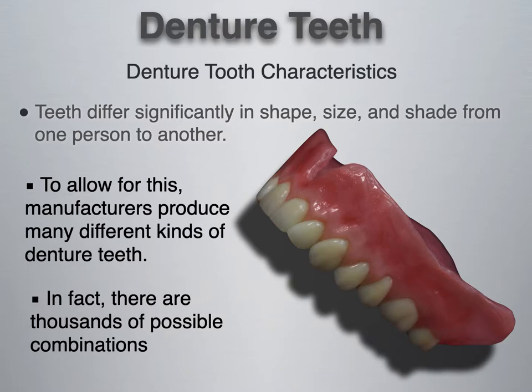Let's talk about some denture tooth characteristics. Teeth differ significantly in shape, size, and shade from one person to another. To allow this, manufacturers produce many different kinds of denture teeth. In fact, there are thousands of possible combinations.